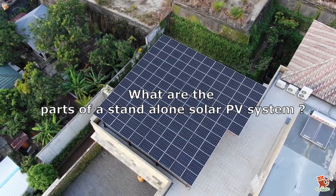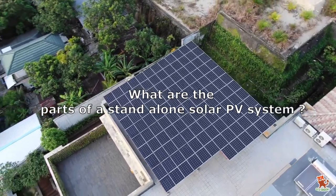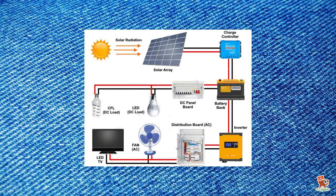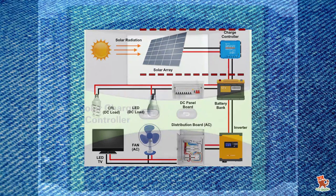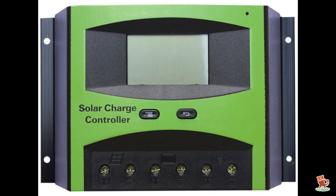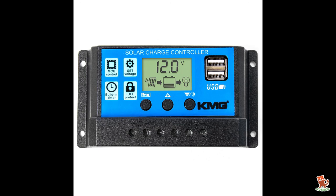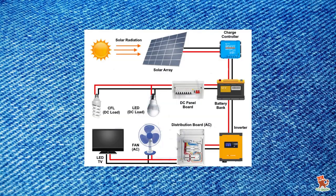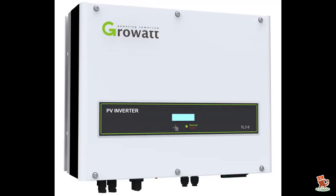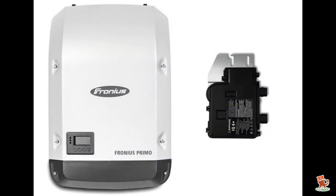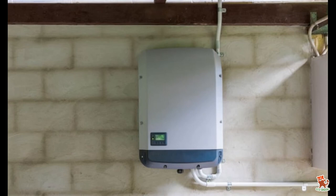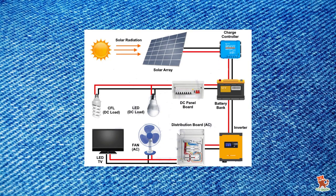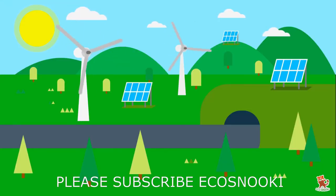What are the parts of an off-grid or standalone solar PV system? The solar panels absorb radiation and the electric current is given to the charge controller. A charge controller, or charge regulator, is basically a voltage and current regulator to keep batteries from overcharging — it regulates the voltage and current coming from the solar panels going to the battery. The batteries are connected between the charge controller and inverter. The basic function of an inverter is to convert the DC power that solar panels create to AC power usable in homes and businesses. If there is any DC load, an extra connection will be there between the battery and a DC panel board.